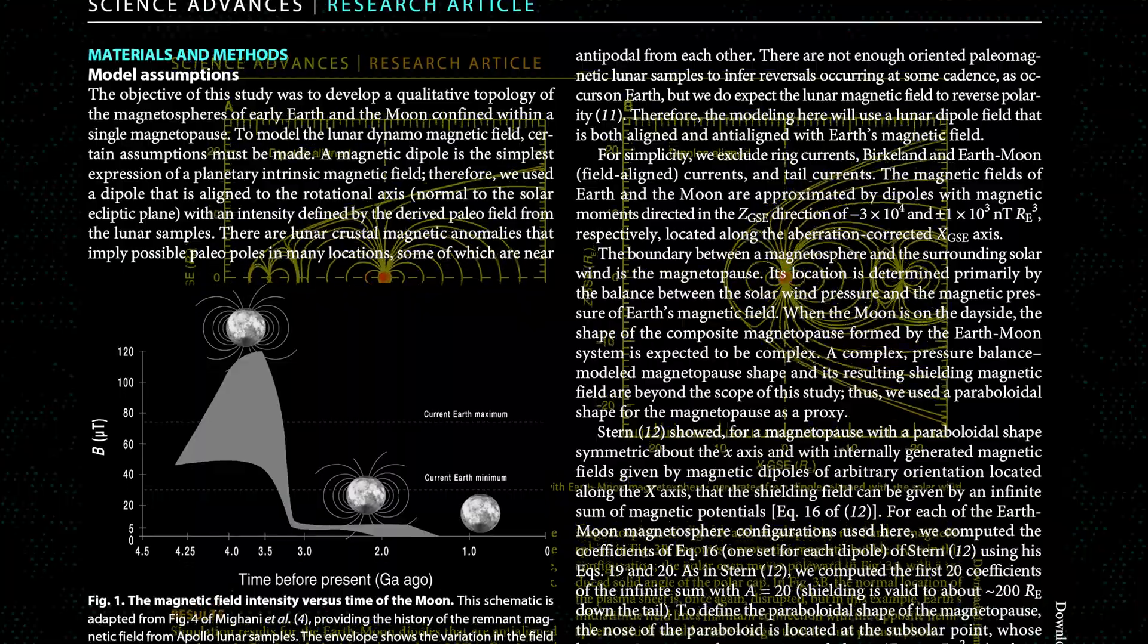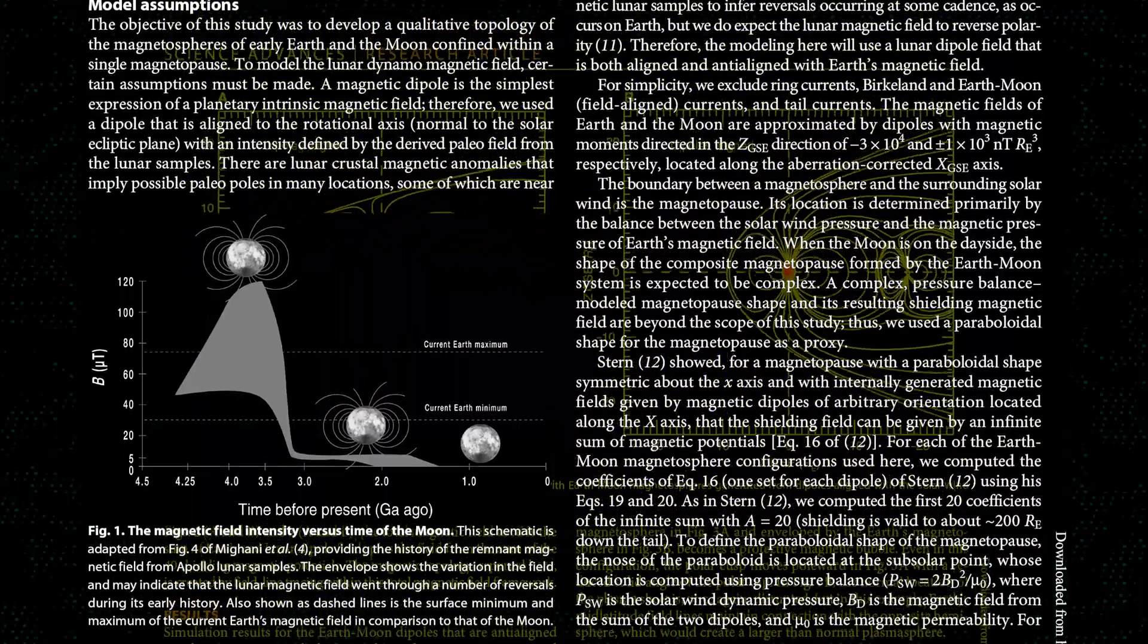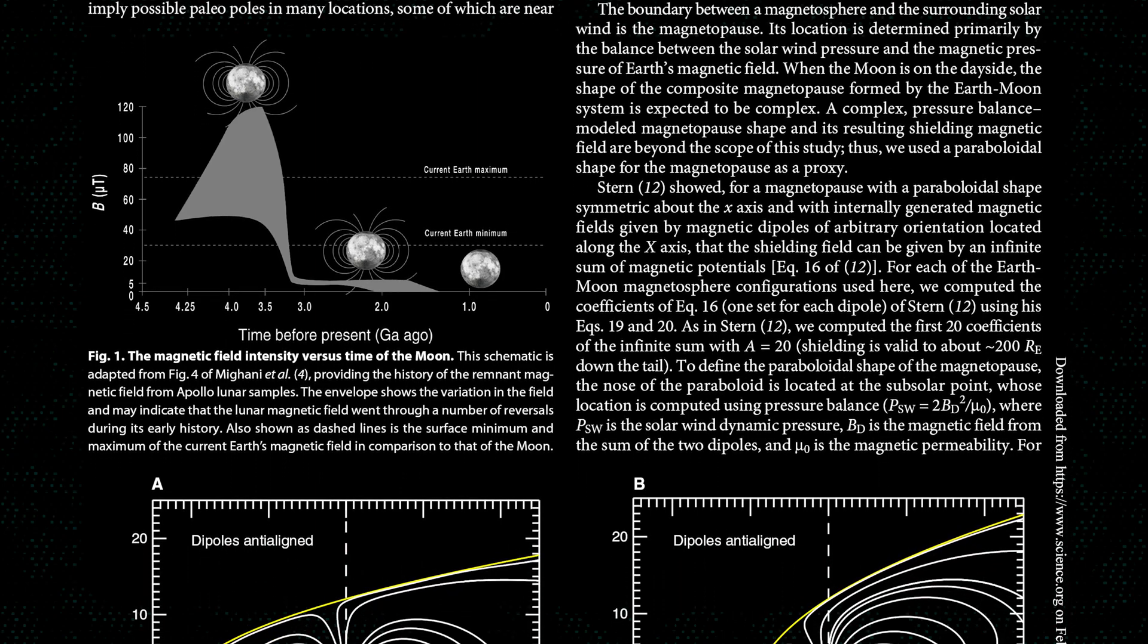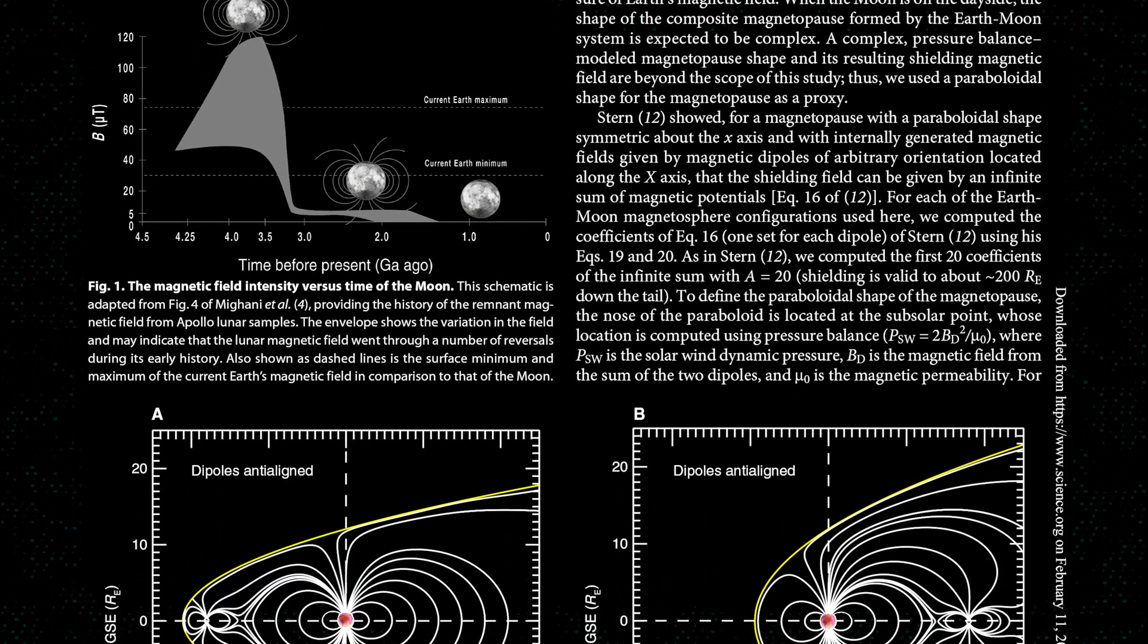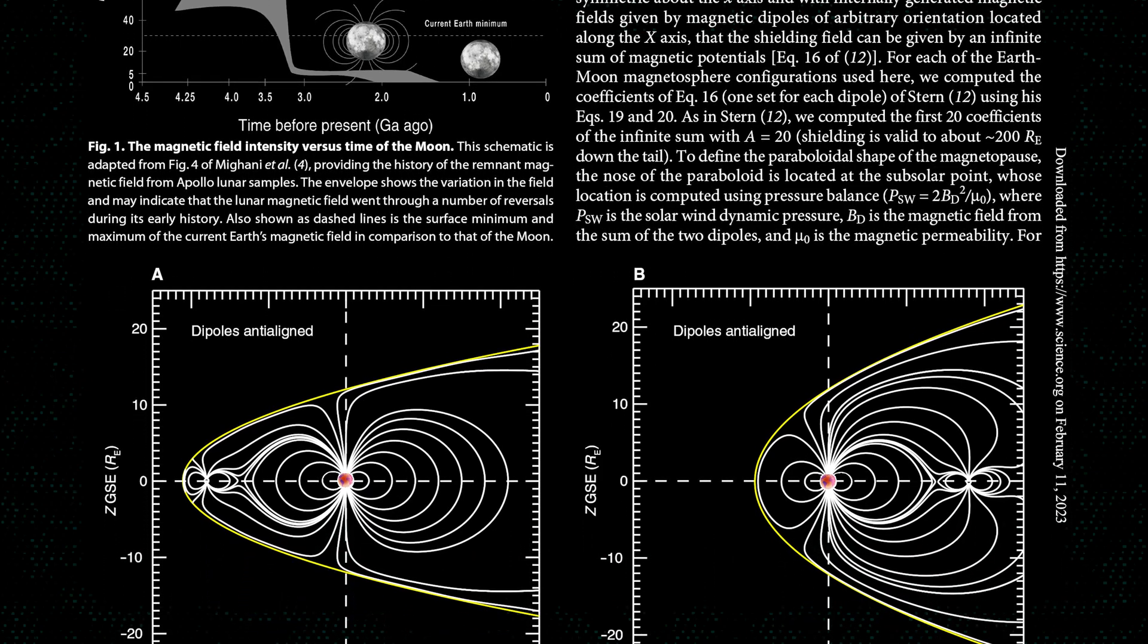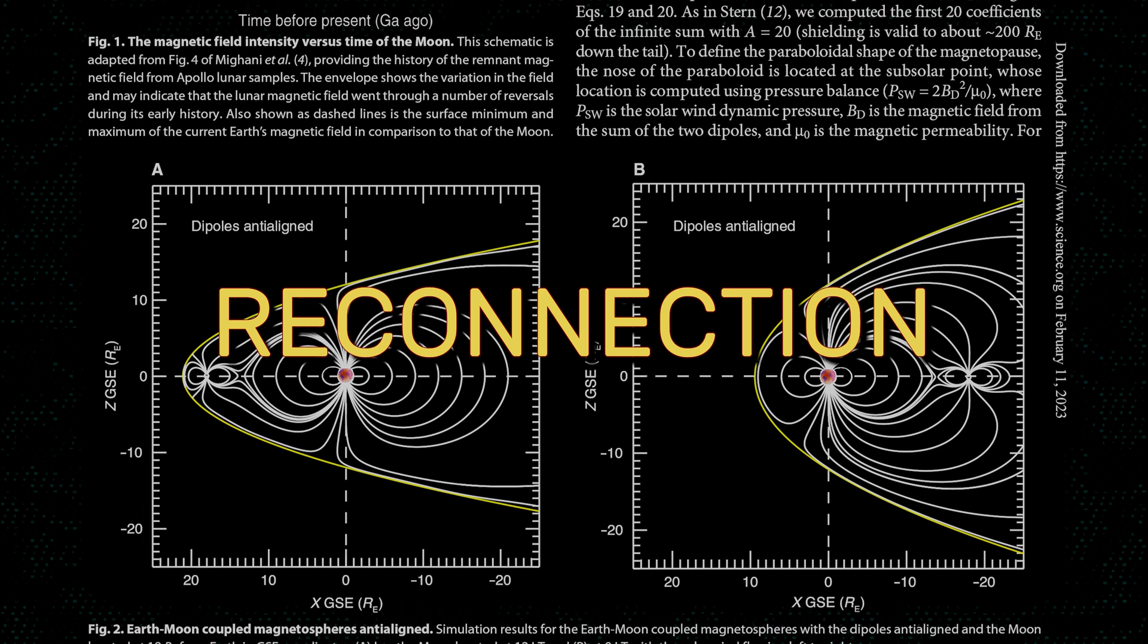The significance of magnetic connection cannot be overstated. This phenomena would have strengthened the protective plasma bubble around the Terra-Luna system and prevented the incursion of solar wind. This was especially important on ancient Earth because at this time the Earth lacked a substantial ionosphere.